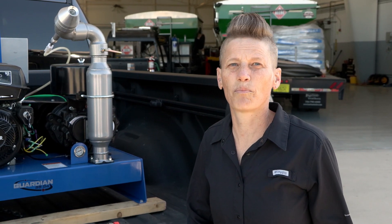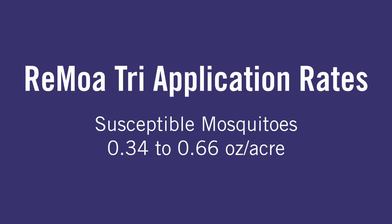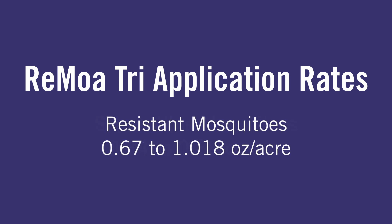First, select your application rate. When using Ramoa Tri, the application rate ranges from 0.34 ounces per acre to 1.018 ounces per acre. When targeting susceptible insects, use an application rate of 0.34 to 0.66 ounces per acre. When targeting resistant insects, use an application rate of 0.67 to 1.018 ounces per acre.